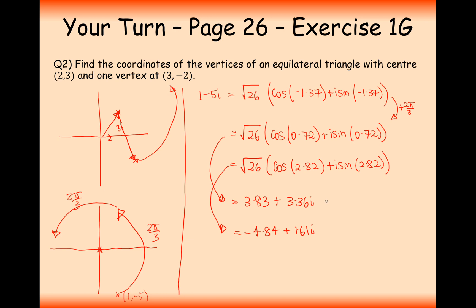Okay, so now what I've got to do is I've now got to add 2 + 3i onto these coordinates here to turn them into the vertex in the original question. Because at the moment they're just relative from (2, 3). So adding on 2 to this one here will give us 5.83. And adding on 3 to this one will give us 6.36i. And adding on 2 to this one will give us -2.84. Add on 3 to this one, 4.61i.